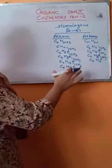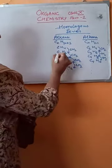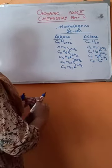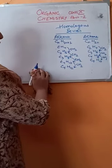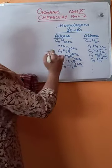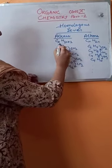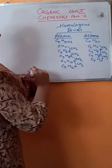In the same way, alkynes will also form a similar homologous series. Remember, in all the homologous series, the two adjacent compounds differ by a CH₂ group. Also remember that in a homologous series, the general molecular formula remains the same for all the members of the series.